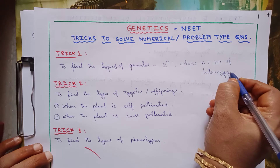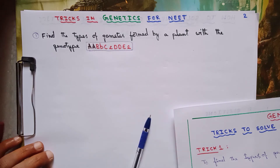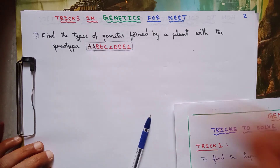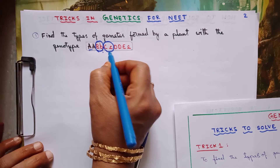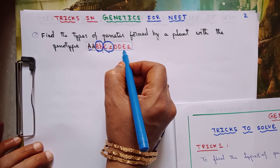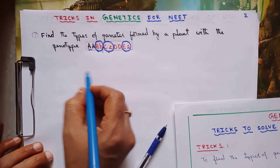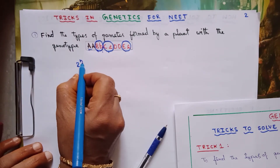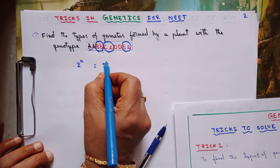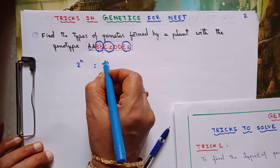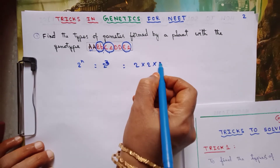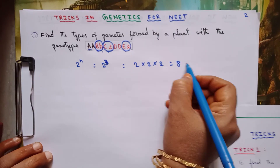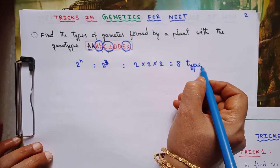In this genotype, let's count the heterozygotes: capital A capital A is homozygous; capital B small b — heterozygous, that's one; capital C small c — heterozygous, that's two; capital D capital D is homozygous; capital E small e — heterozygous, that's three. So n equals 3. Therefore 2 power 3 equals 2 × 2 × 2 = 8 types of gametes.